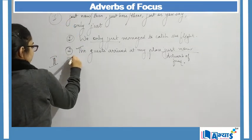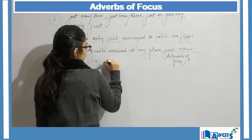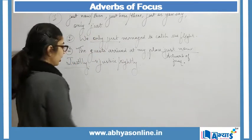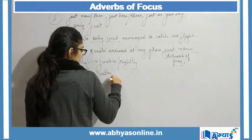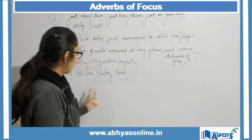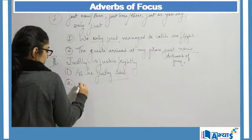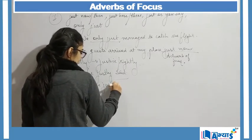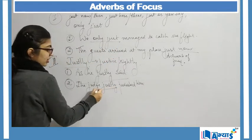The second adverb is 'justly'. Justly is similar to providing justice to someone, or we can use it with the word 'rightly' — justly means rightly. An example: as he justly said, or as he rightly said — both mean the same. Another example: The judge justly punished him.